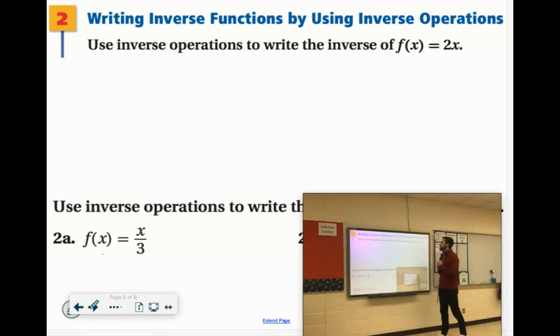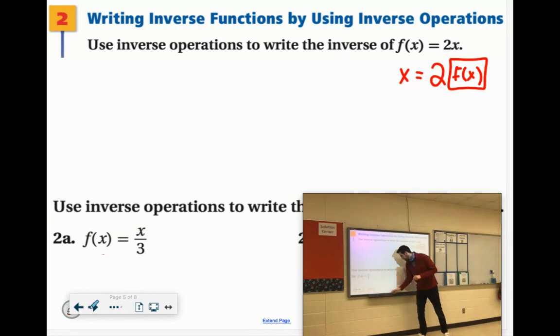Use inverse operations to write the inverse of f(x) equals 2x. So again, let's just flip the f(x) and the x. So let's put the x here and two times, I'll put f(x) kind of in a box there. And remember, we're looking for the inverse, so I'll put f^(-1)(x). So what would you do to get rid of that 2? You would divide by 2 on both sides.